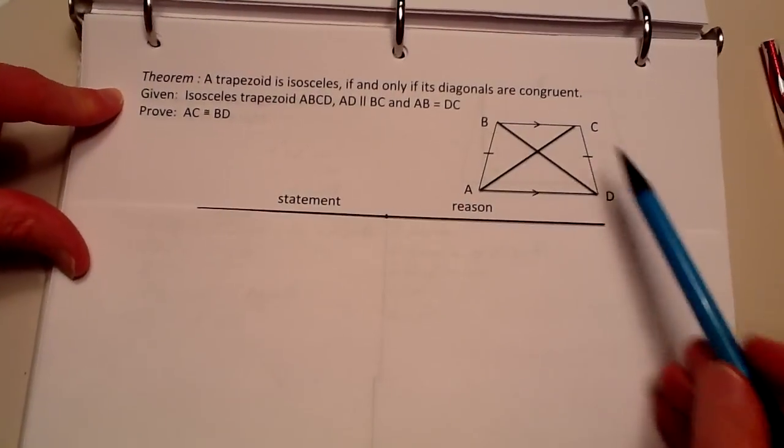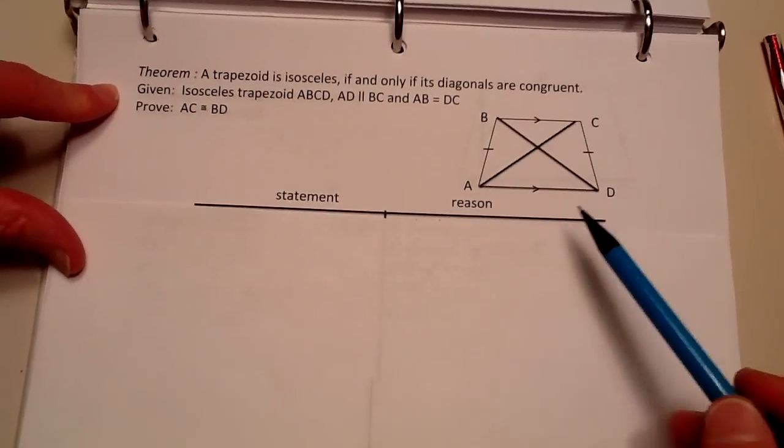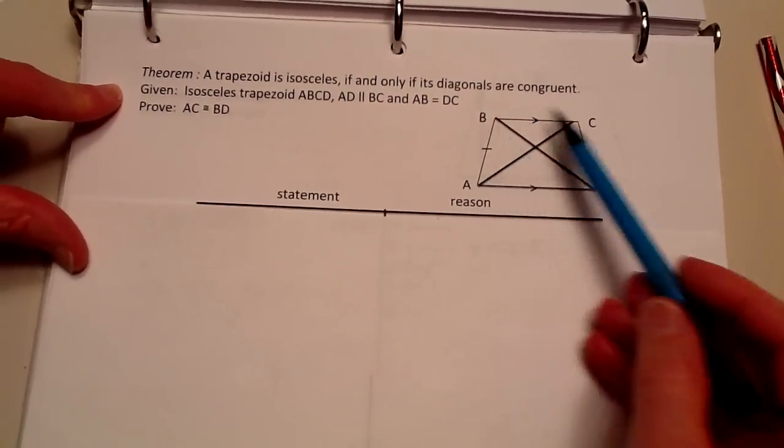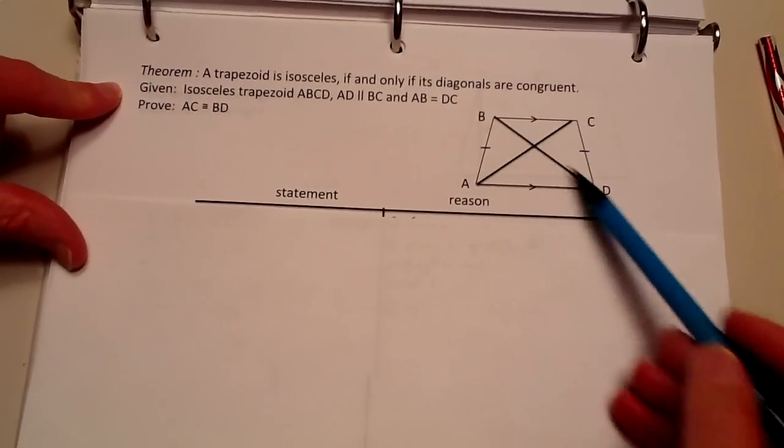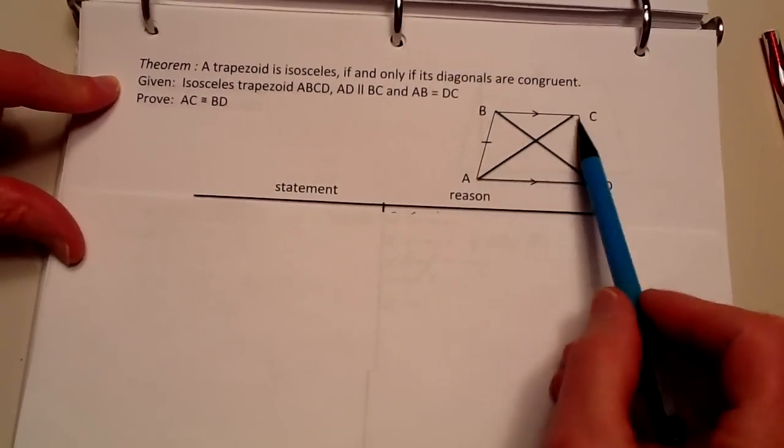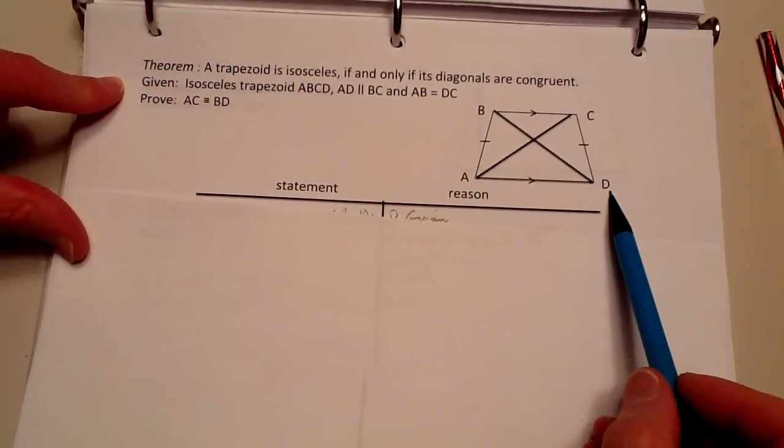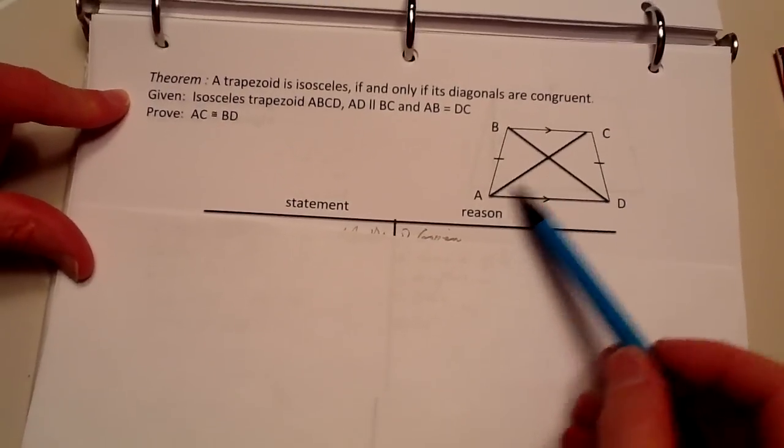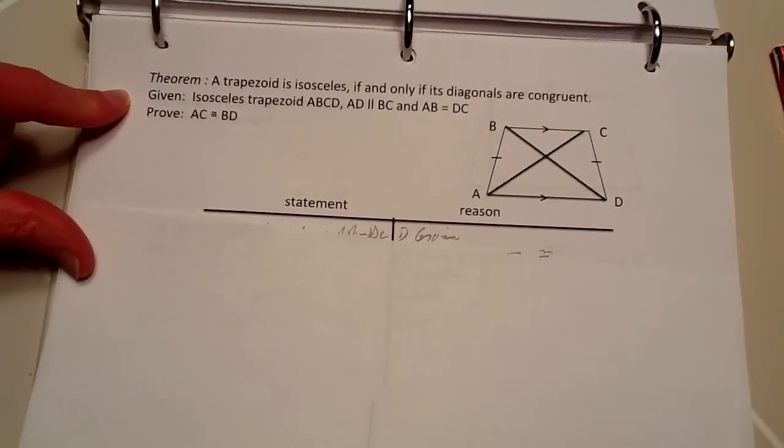Here we have a sketch of an isosceles trapezoid ABCD with two diagonals drawn. You can see BC is parallel to AD, which makes it a trapezoid, and it's isosceles because both these sides are the same.